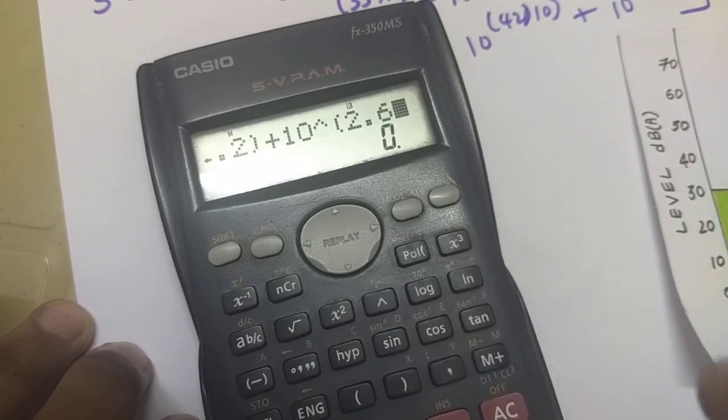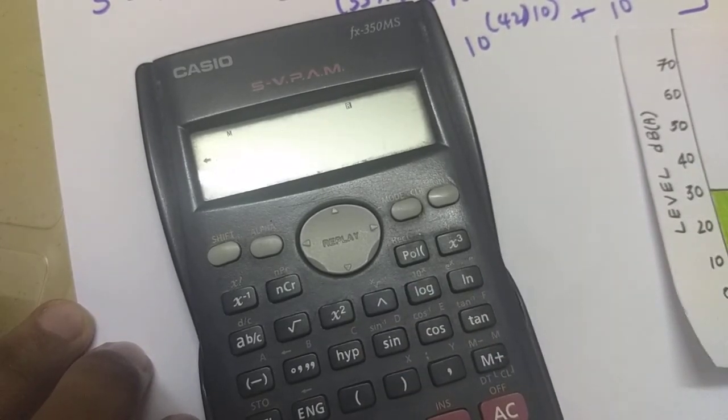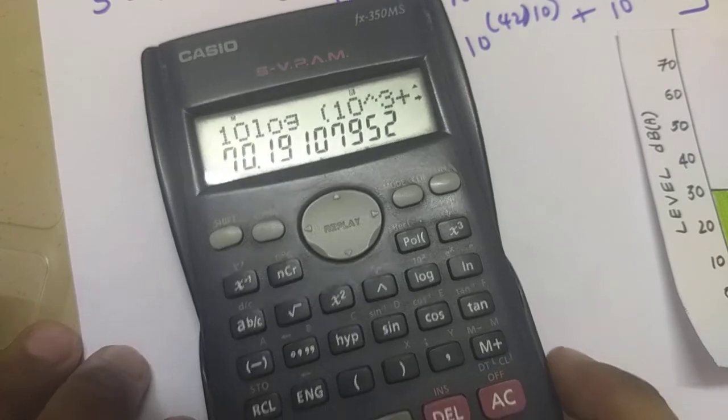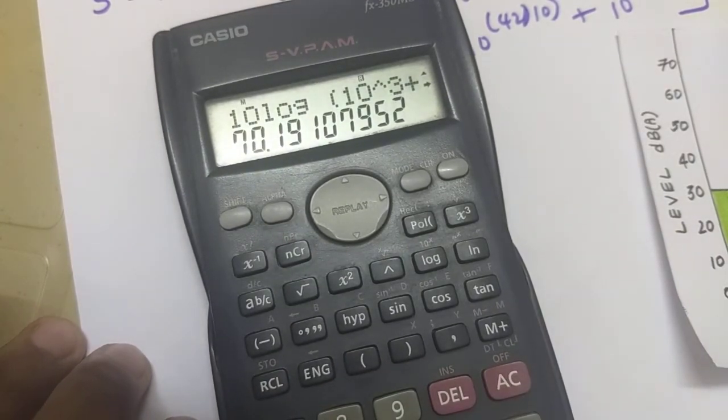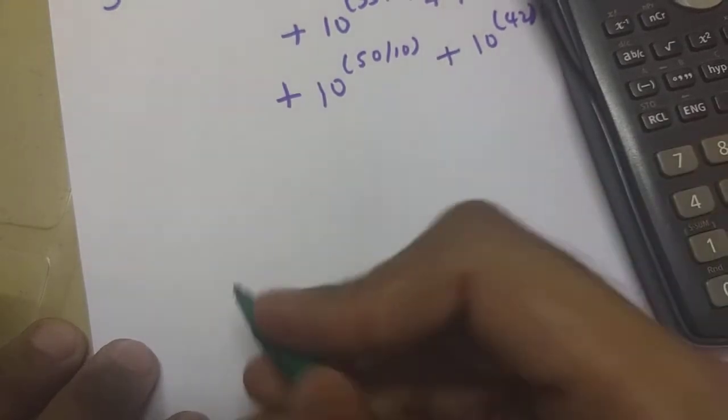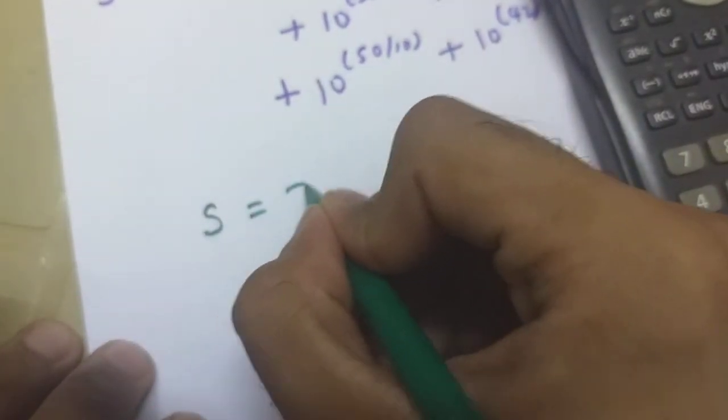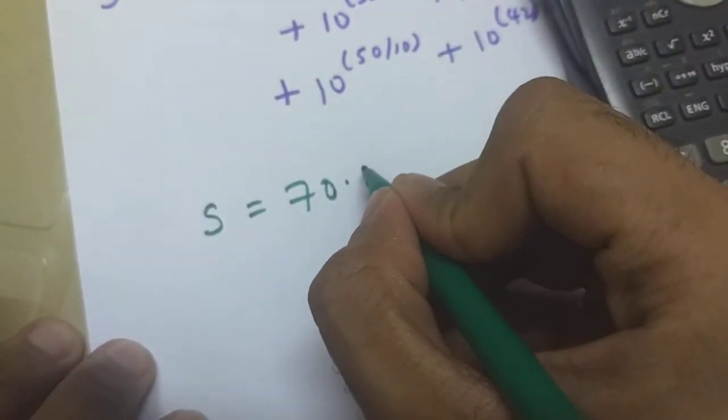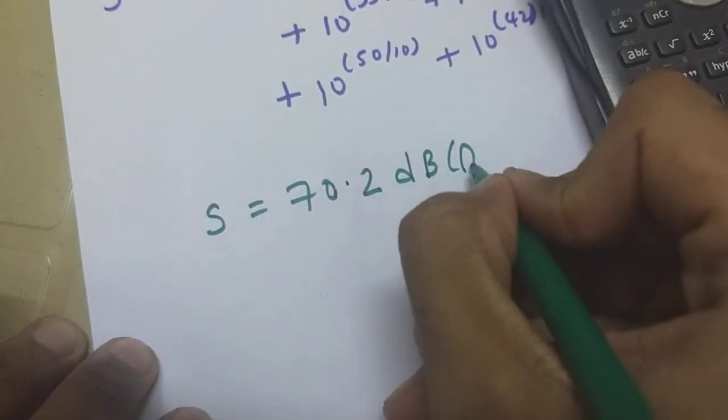Alright the answer is 70.19 so that is the final value 70.19 so I'm going to write approximately 70.2 dBA.